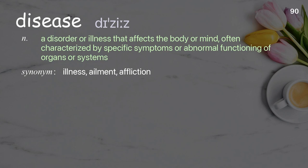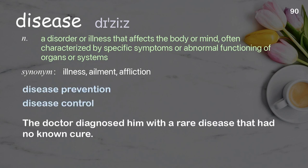Disease. A disorder or illness that affects the body or mind, often characterized by specific symptoms or abnormal functioning of organs or systems. Examples: disease prevention, disease control. The doctor diagnosed him with a rare disease that had no known cure.